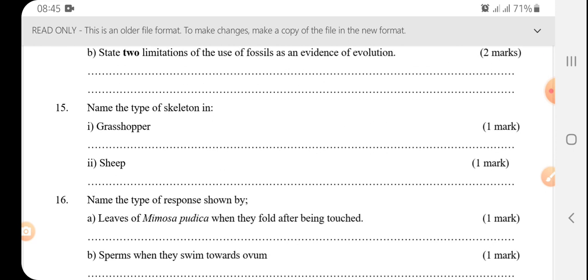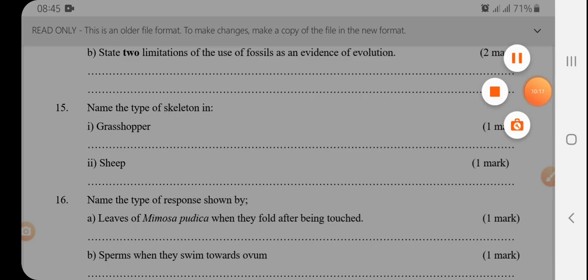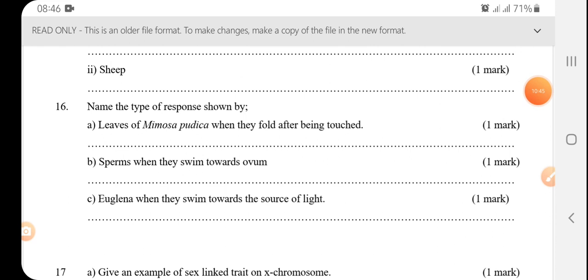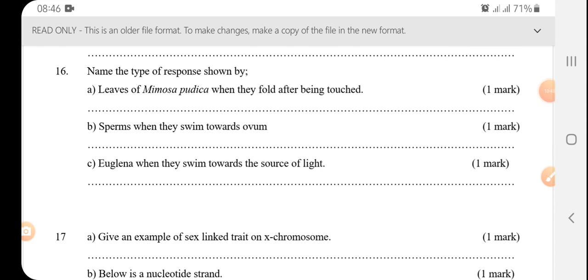Name the type of skeleton in grasshopper and sheep. So I'm going to help to answer that using the diagram. So the exoskeleton is found in grasshopper, and that means the protective layer is on the outside, and it is usually chitinous. Well, the endoskeleton, the sheep has endoskeleton, and endoskeleton means the skeleton is inside, as shown in the picture.